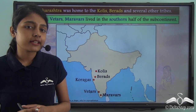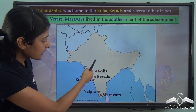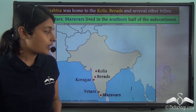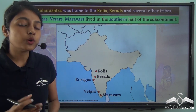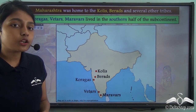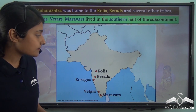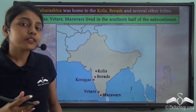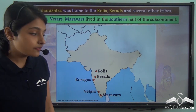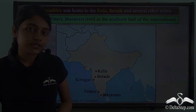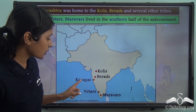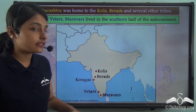In the western and southern part of the Indian subcontinent, we have the Kholis and the Behrads, who lived on the highlands of Maharashtra and were also spread in parts of Gujarat. In the southern part of the Indian subcontinent lived some very powerful tribes like the Koragas, the Vetars, and the Marawars.